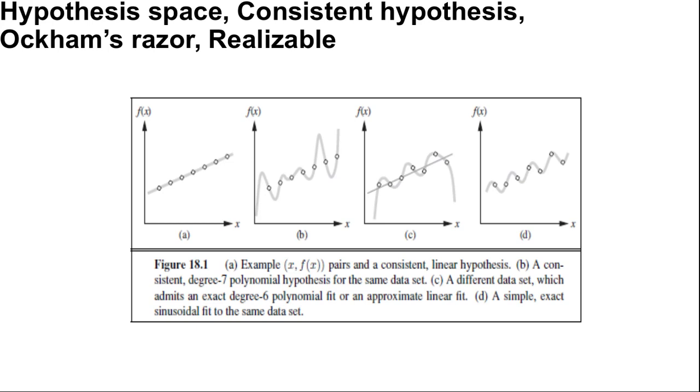Figure b shows a high degree polynomial that is also consistent with the same data. This illustrates a fundamental problem in inductive learning: how do we choose from among multiple consistent hypotheses? The answer is to prefer the simplest hypothesis consistent with the data. This principle is called Ockham's razor, after the 14th century English philosopher William of Ockham. Defining simplicity is not easy, but it seems clear that a degree 1 polynomial is simpler than a degree 7 polynomial, so figure a should be preferred.